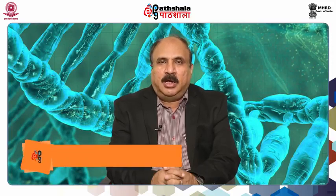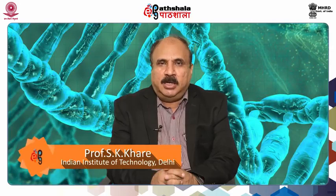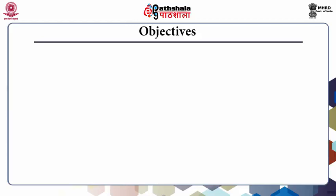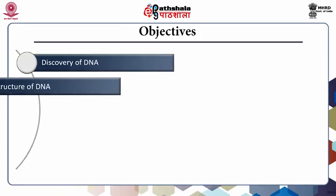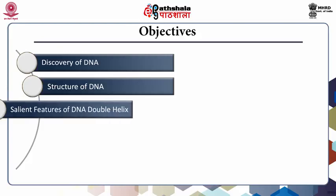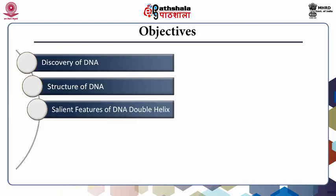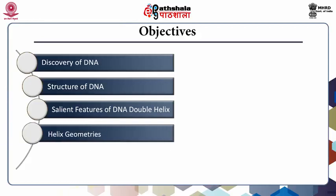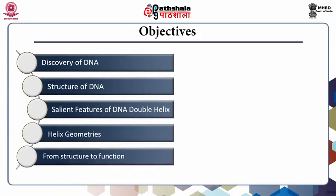In this paper, we will mainly cover DNA, RNA, their structure and function and other related biochemistry. Under the paper Structure and Function of Biomolecule 2, this module is going to deal with DNA. The objectives of this module will be: discovery of DNA, structure of DNA, salient features of the DNA double helix, helix geometrics, and structure and function of DNA.